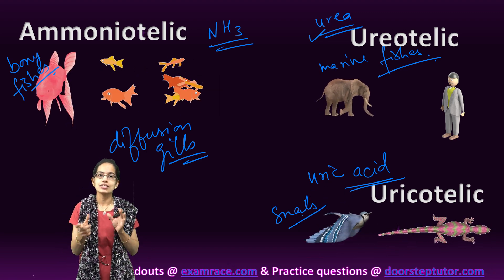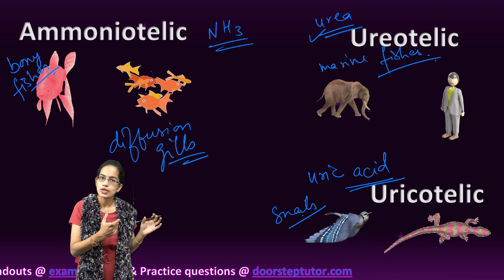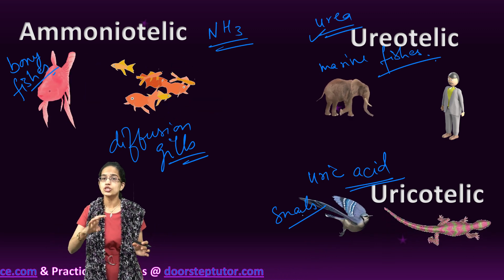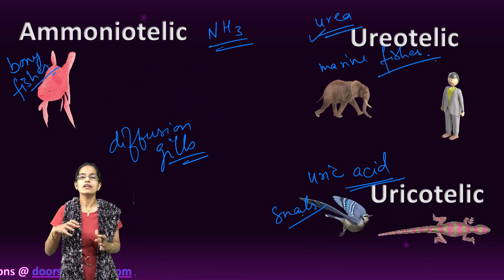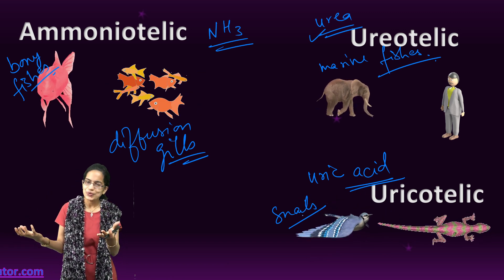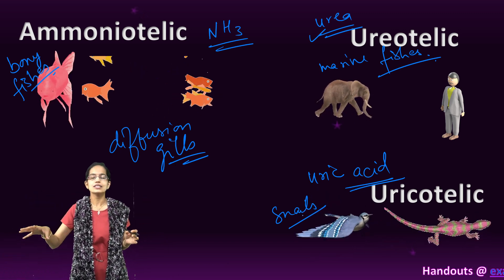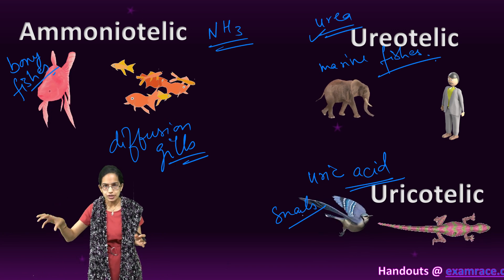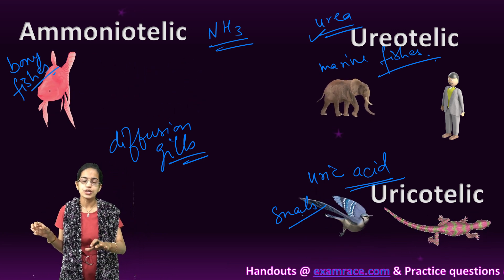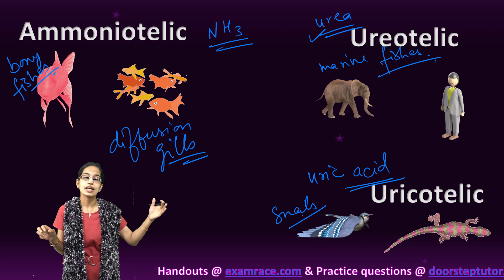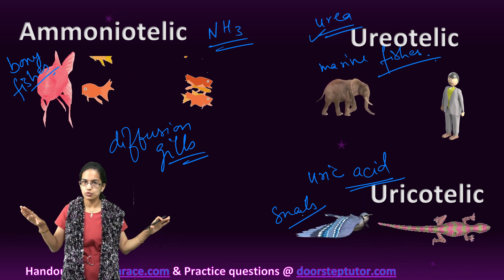Since excretion occurs as uric acid, it is known as uricotelic. To summarize, the three forms of excretion are ammonia, urea, and uric acid. Ammonia is ammonotelic, urea is ureotelic, and uric acid is uricotelic.